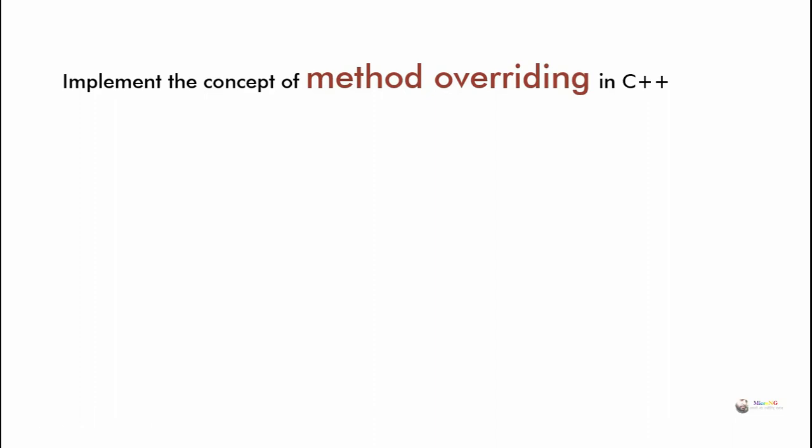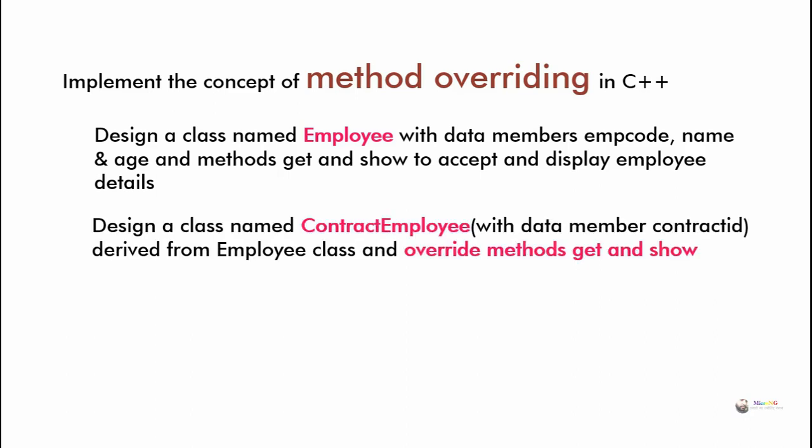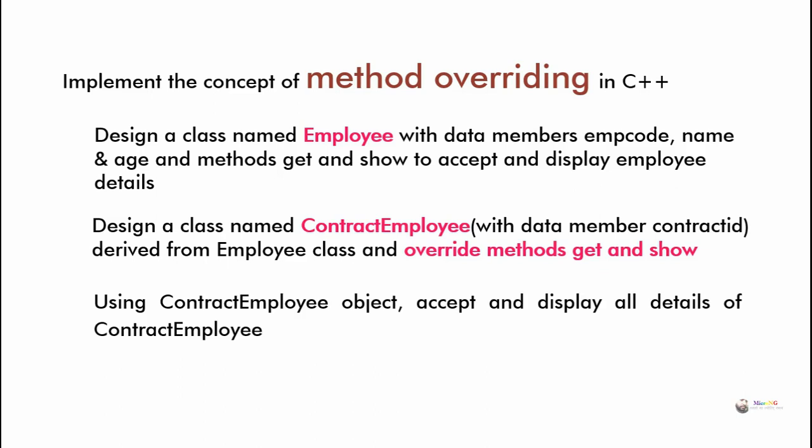Implement the concept of method overriding in C++. Design a class named Employee with data members EMP code, name, and age, and methods get and show to accept and display employee details. Design a class named ContractEmployee with data member contract ID, derived from the Employee class, and override methods get and show. Using a ContractEmployee object, accept and display all details of a contract employee.